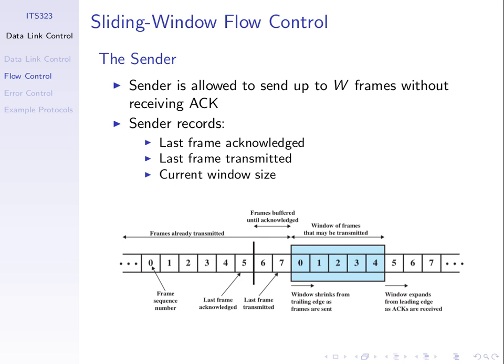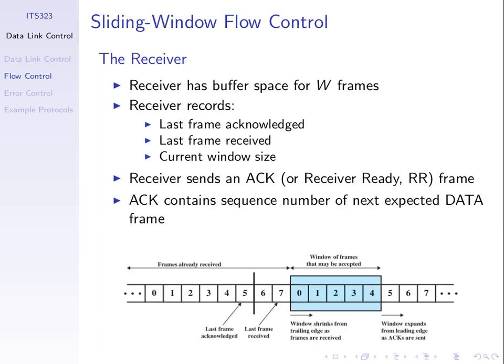The three variables are indicators of the split between the four sets of frames. Commonly, we think of the last frame acknowledged, the last frame transmitted, and the window size — which together tell us where each split is. By storing values for those three variables, the sender keeps track of what's happened in terms of sending data and receiving ACKs. The receiver does effectively the same thing, but from the perspective of receiving data and sending back ACKs.